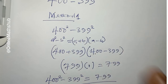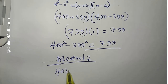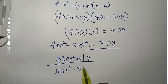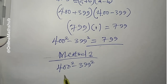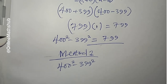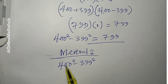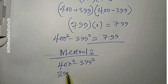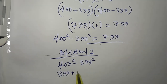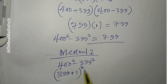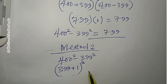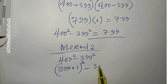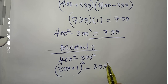Now solving using the second method — what we have is 400 squared minus 399 squared. What we're going to do is write 400 as (399 + 1), all raised to the power of 2. This is the same as 400 because 399 + 1 = 400, and then minus 399 squared.